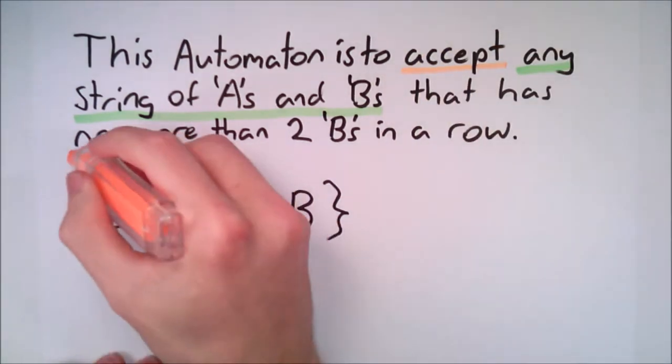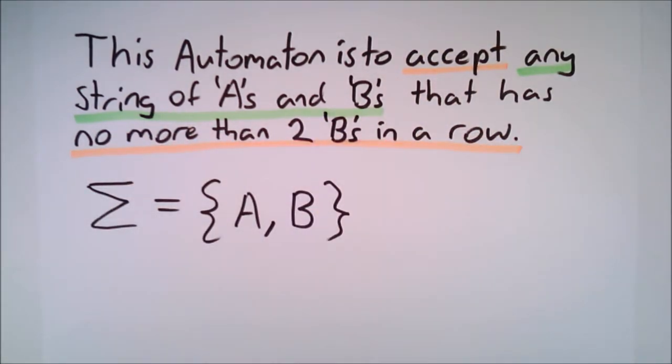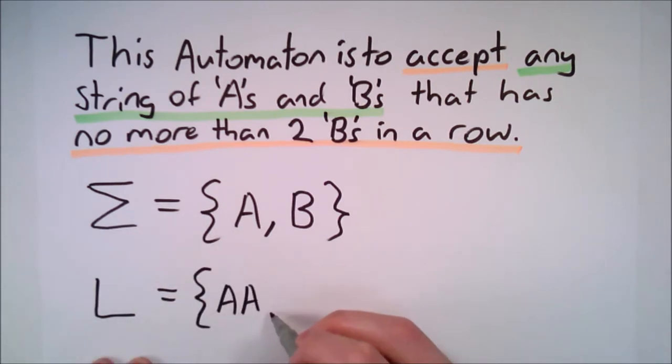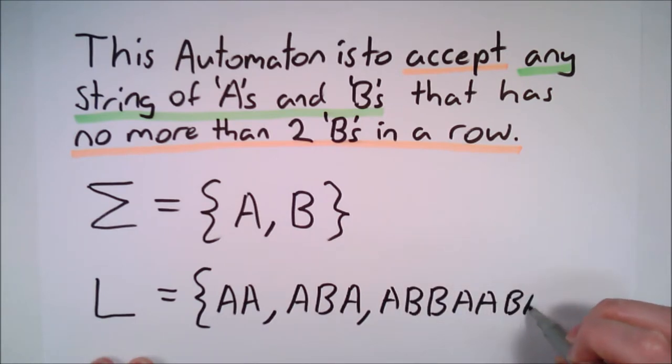Except, no more than two B's in a row. This tells us that our language, or the set of strings our automaton will accept, is all strings with at most 0, 1 or 2 B's in a row.